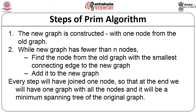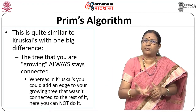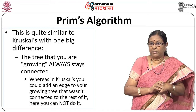The steps of Prim's algorithm are: the new graph is constructed with one node from the old graph — any node. While the new graph has fewer than N nodes, find the node from the old graph with the smallest connecting edge to the new graph and add it. Every step adds one node. At the end, every step of the algorithm brings one additional node into the tree, and all nodes will form the minimum spanning tree of the original graph. This is quite similar to Kruskal's because the goal is to find the minimum spanning tree; however, one major difference is that the tree you are growing will always stay connected.